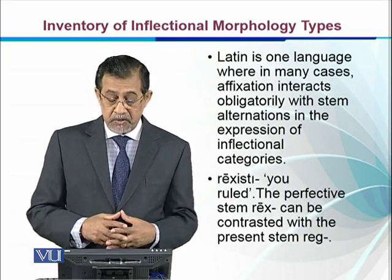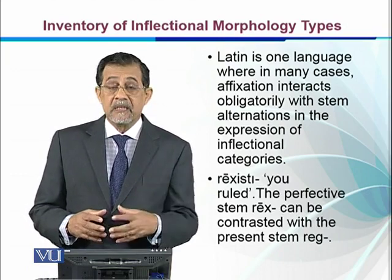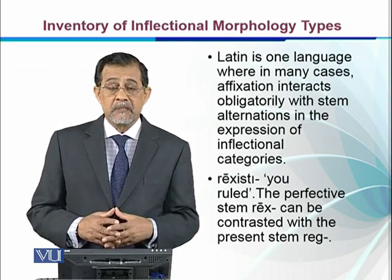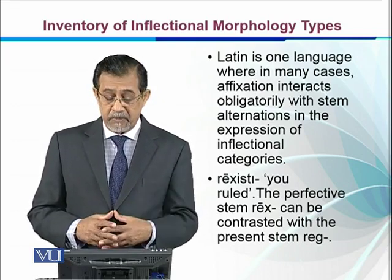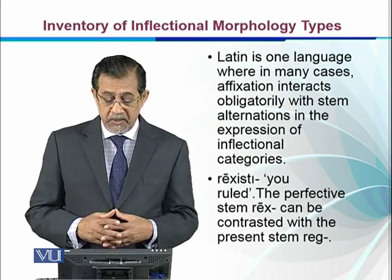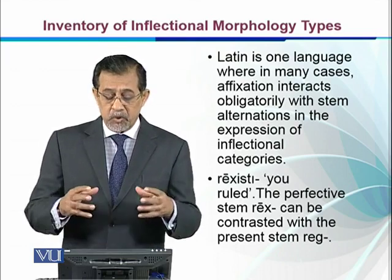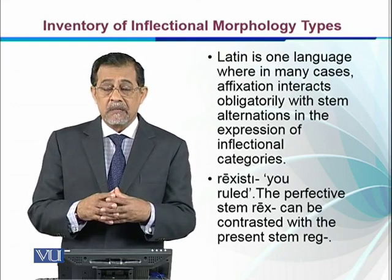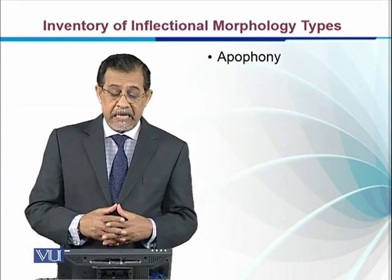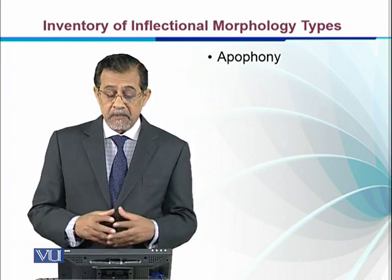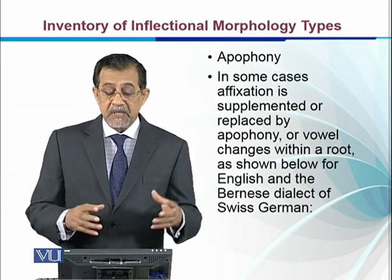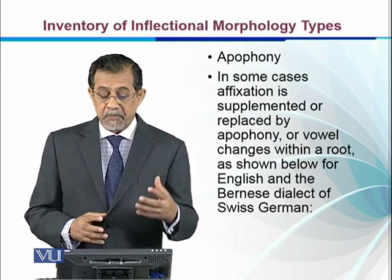In Latin, 'rex' is the perfective stem, indicating that something has taken place — similar to the past participle. We can contrast it with the present stem 'reg,' which is attached to the root. This illustrates another aspect of inflectional morphology types.